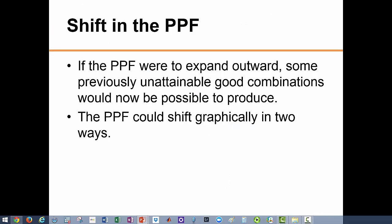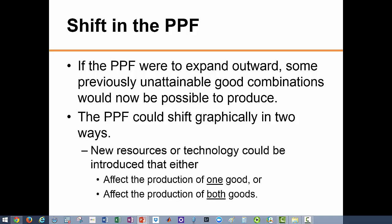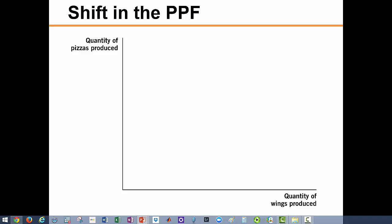Economic growth enables a society to produce and consume more, and this is achieved when the PPF shifts outwards. When this happens, previously unattainable combinations like point E become attainable. The PPF shifts as a result of a change in one or more of the factors we assumed to be constant — that is, technology or resources — and this could happen through an increase in technology or resources used to produce just one of the two goods, or through a general improvement affecting all goods in the economy.